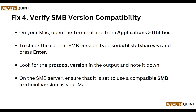Our fourth step is to verify SMB version compatibility. On your Mac, open the Terminal app from Applications > Utilities and check the current SMB version by typing `smbutil statshares -a`, then press Enter. Look for the protocol version in the output and note it down. On the SMB server, ensure it is set to use a compatible SMB protocol version with your Mac.